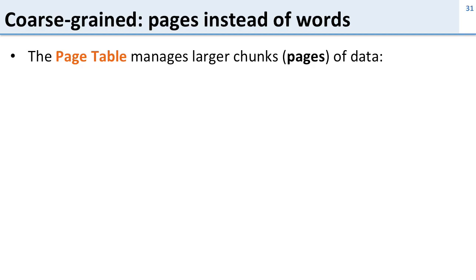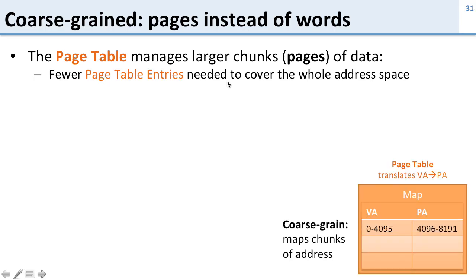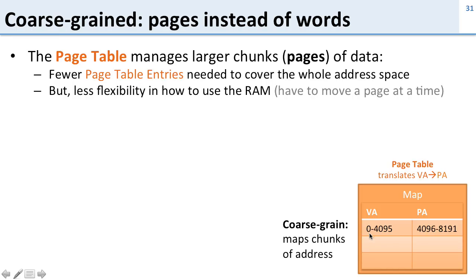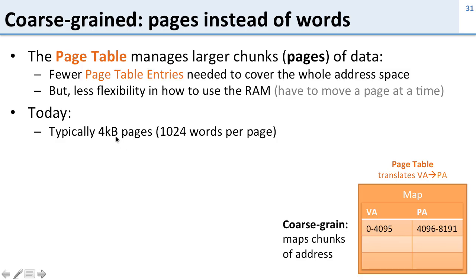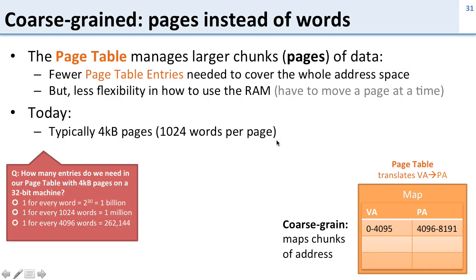So now we're doing coarse-grained pages instead. Our page table is no longer going to manage entries for each word — it's going to manage entries for each page, so we have fewer entries needed to cover the whole address space. With four kilobyte pages, we need one entry for every 1,024 words. Each word is four bytes, so that's 1,024 words per page. That comes to one million entries. Instead of needing a billion entries, we just need one million — this is enormously more manageable.